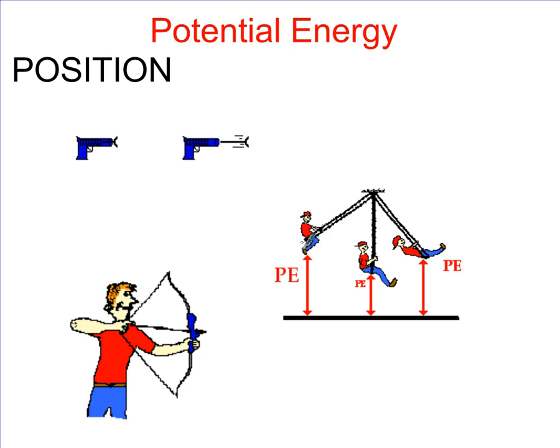We've all experienced the change in potential energy in a swing. We've all seen dart guns that are able to shoot out darts at some pretty cool speed, or even a bow and arrow. Now potential energy is energy due to position.